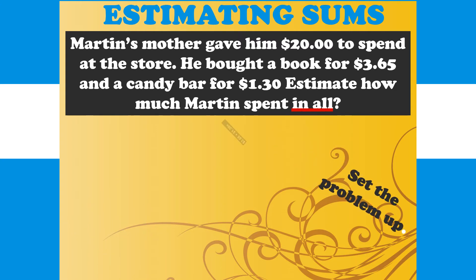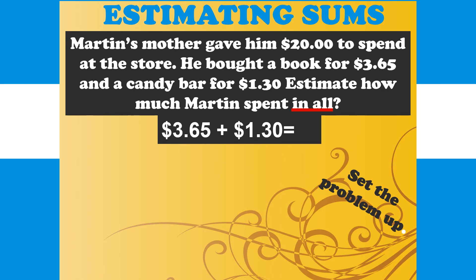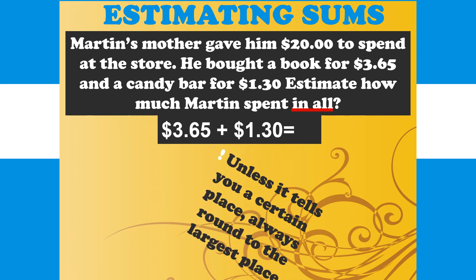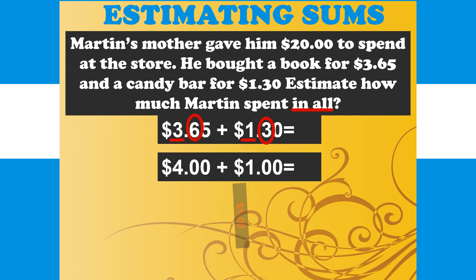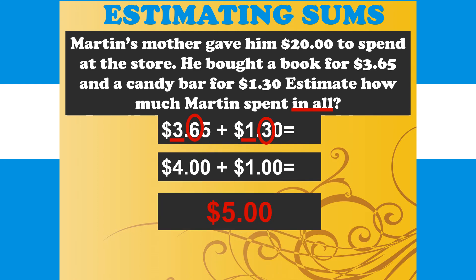These prices will be rounded to the nearest dollar. We will use the digit to the right of the decimal point. In $3.65, the digit right of the decimal is 6, which is greater than 5, so we round up to $4.00. In $1.30, rounding gives us $1.00. So $3.65 rounded to $4.00 and $1.30 rounded to $1.00, giving us an estimate of $5.00 that Martin spent for those items.